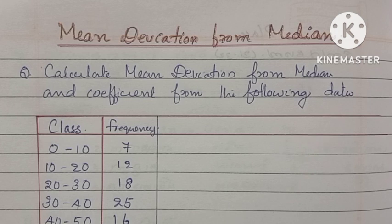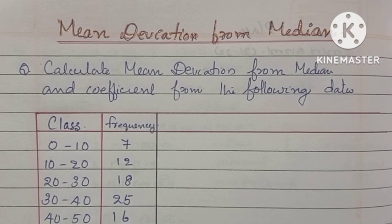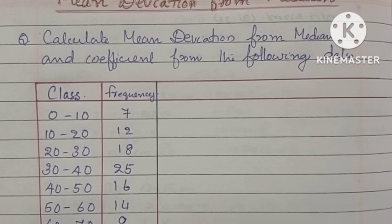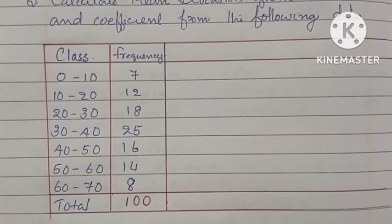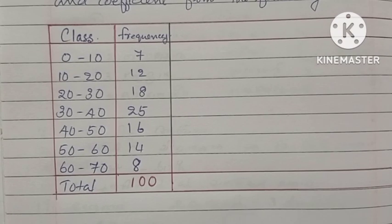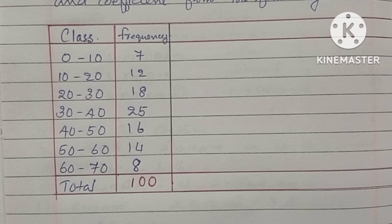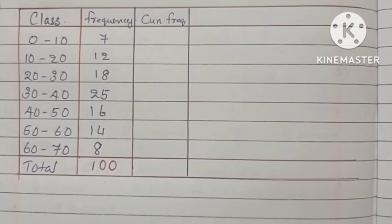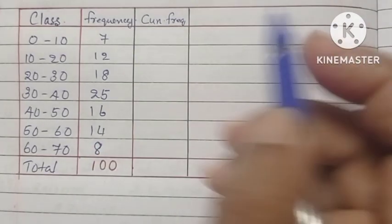In this video, I am explaining how to calculate the mean deviation and coefficient from the median in the simplest way so that all students can understand it easily. It is helpful for students of plus 2 and UG students who are learning statistics. Classes and frequencies are given and the total number of frequency is 100.